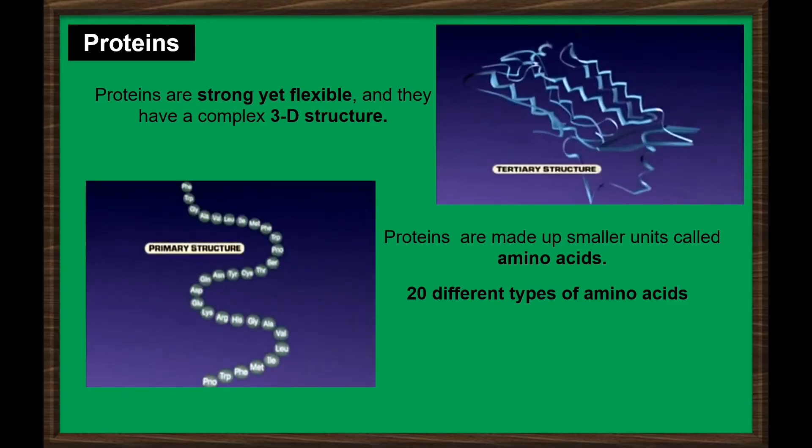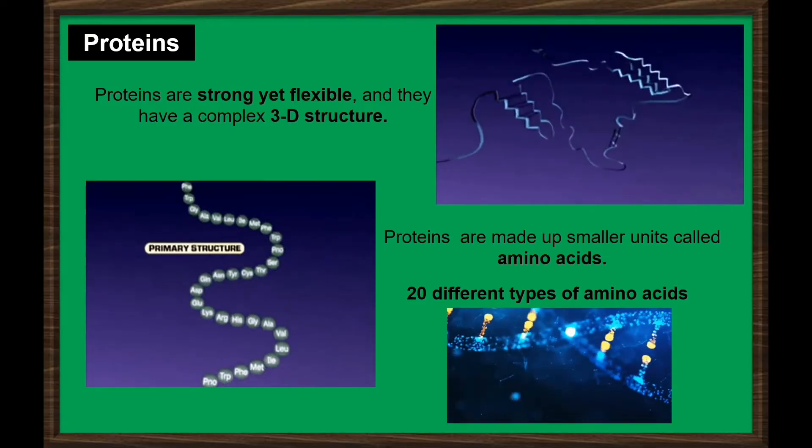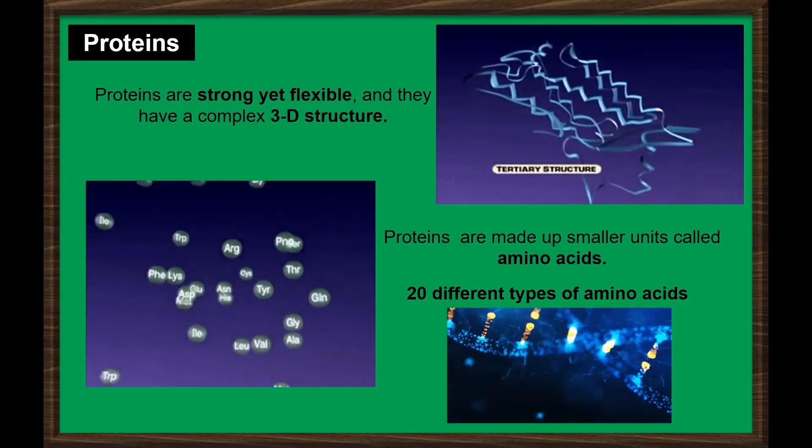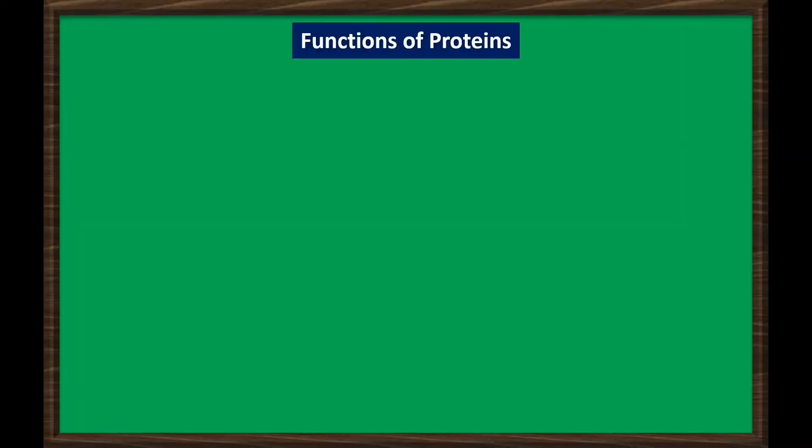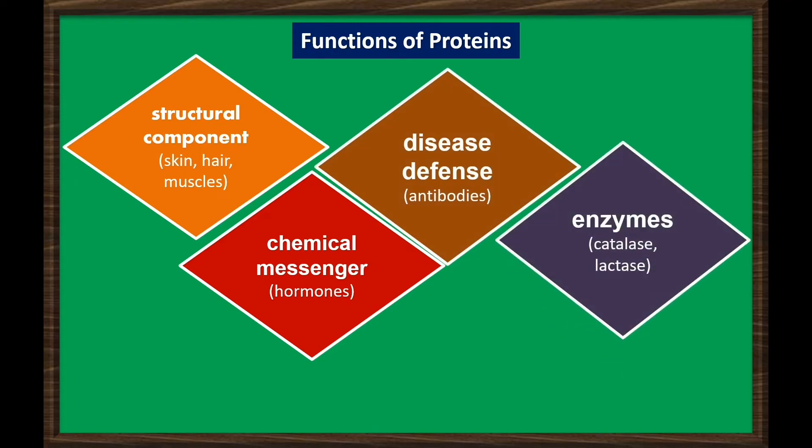Remember from our past lessons that amino acids are coded by combinations of three DNA building blocks determined by the sequence of genes. Functions of proteins: The common functions of proteins are structural component, act as chemical messenger, disease defense, enzymes, and transport storage.